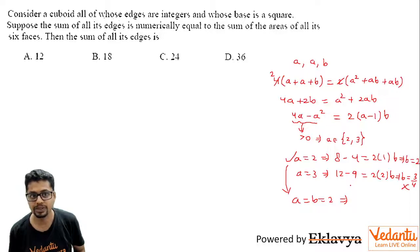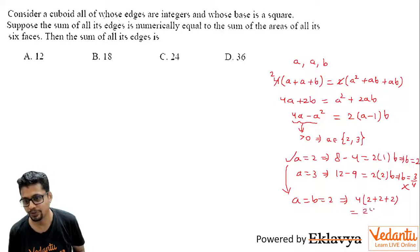And what about the sum of all the edges? It will be, you can say, 4 times 2 plus 4 times 2 plus 4 times 2, so to speak. So you get 24 as the answer.